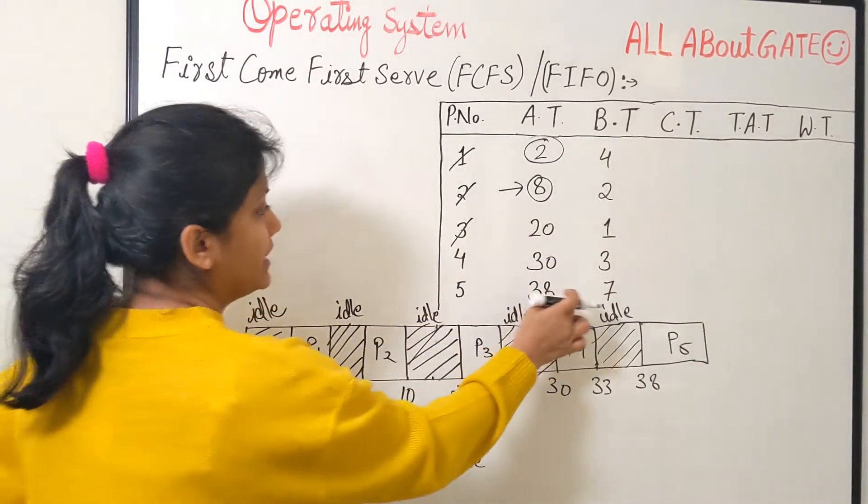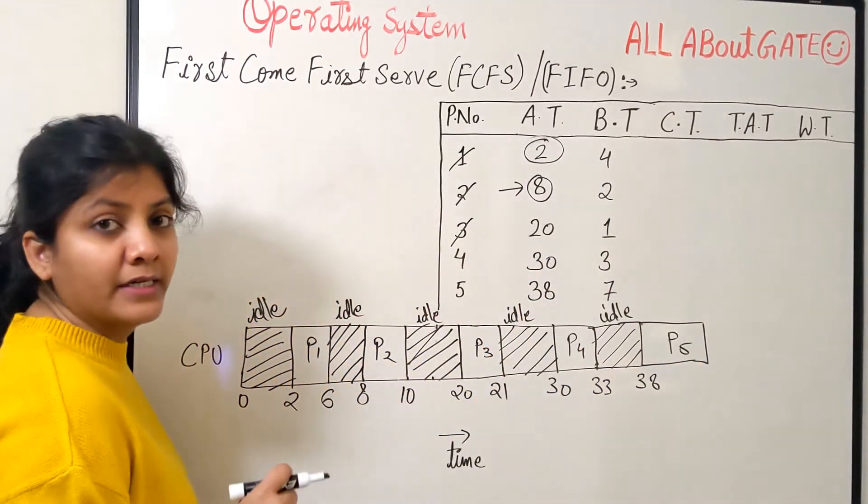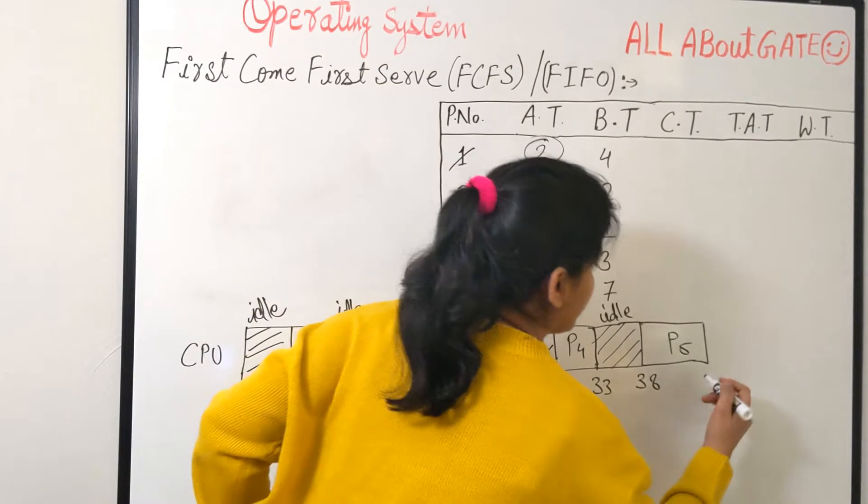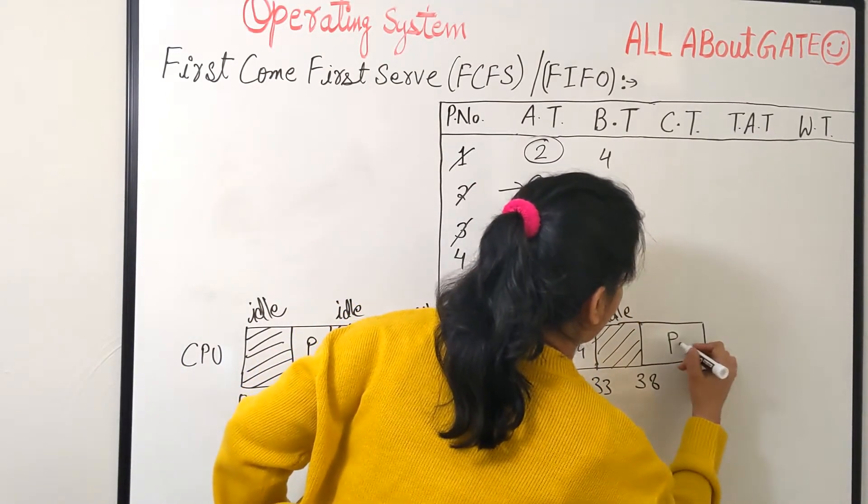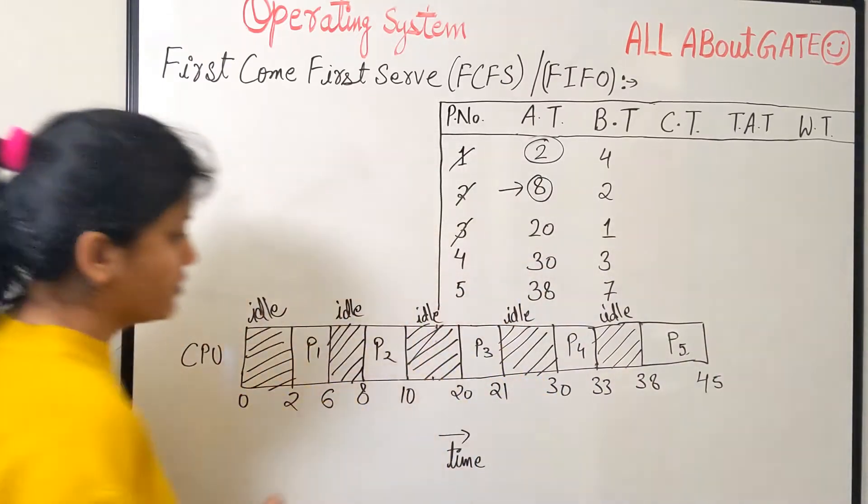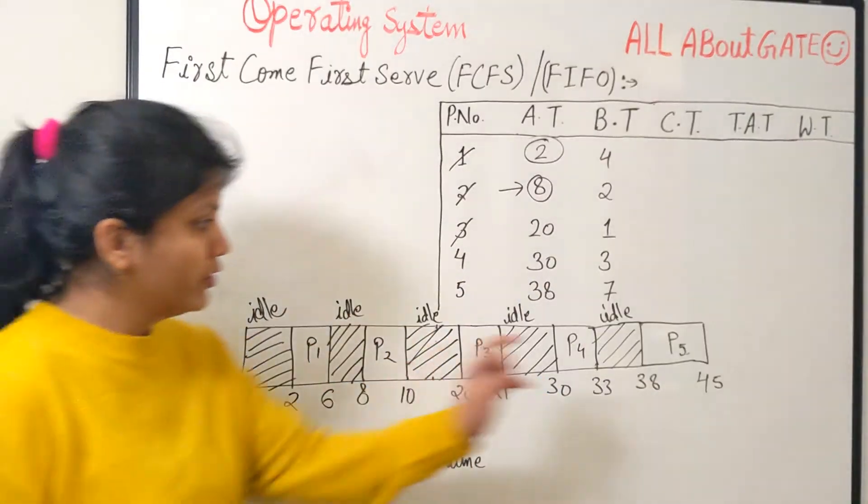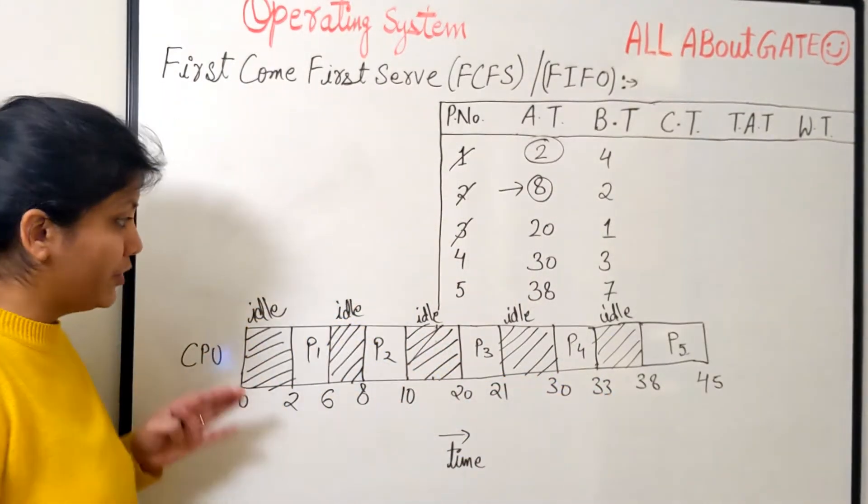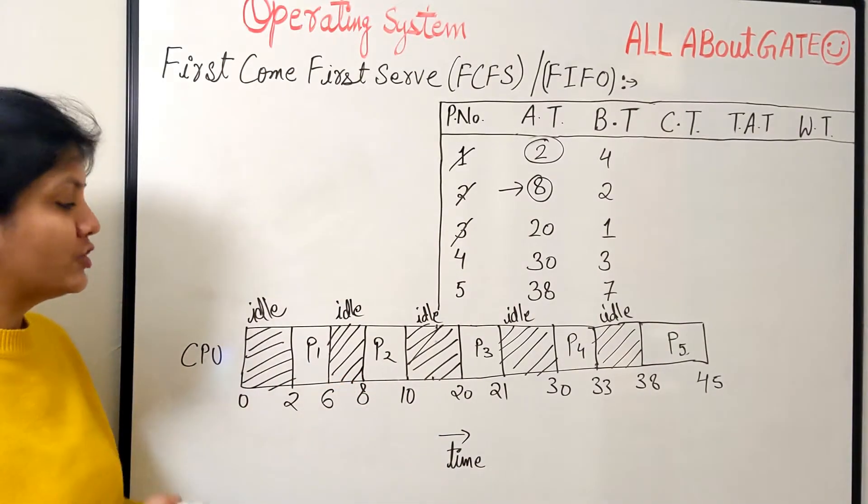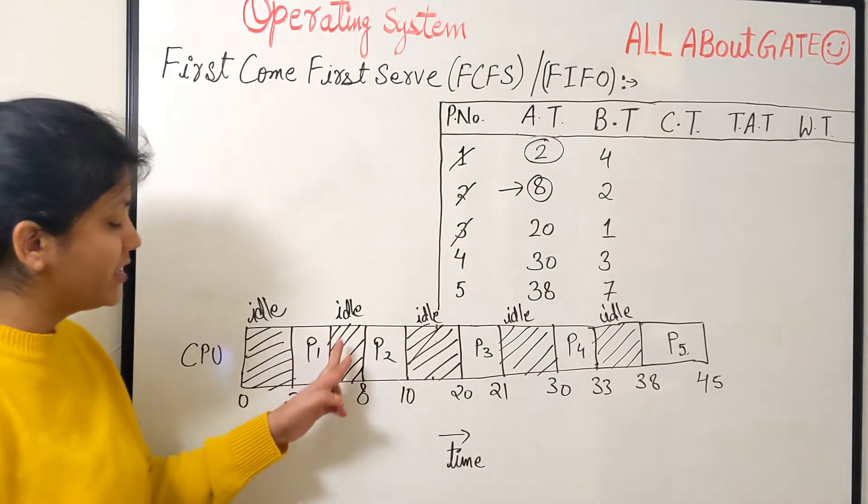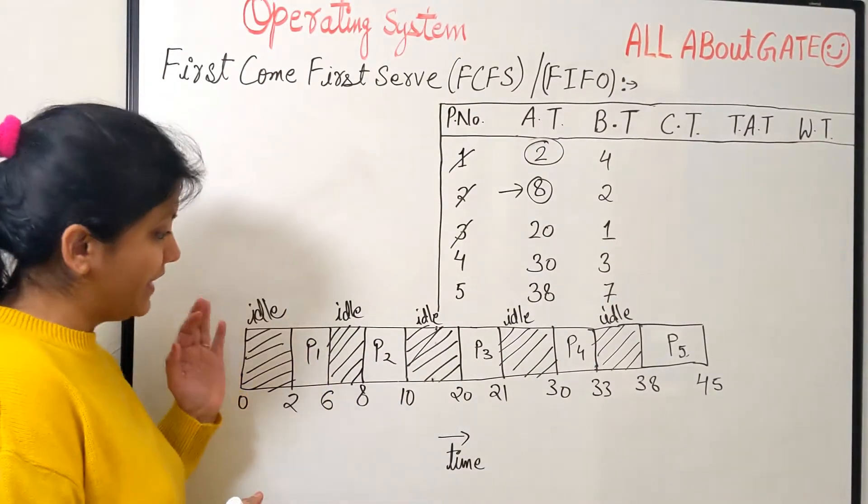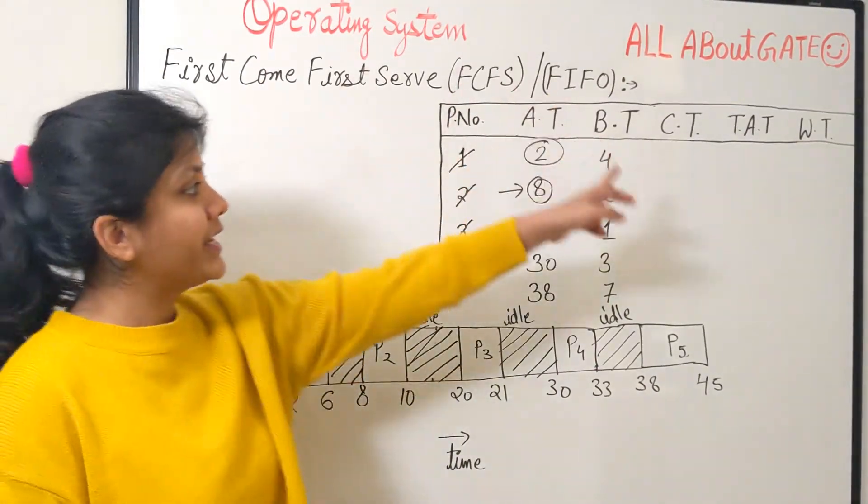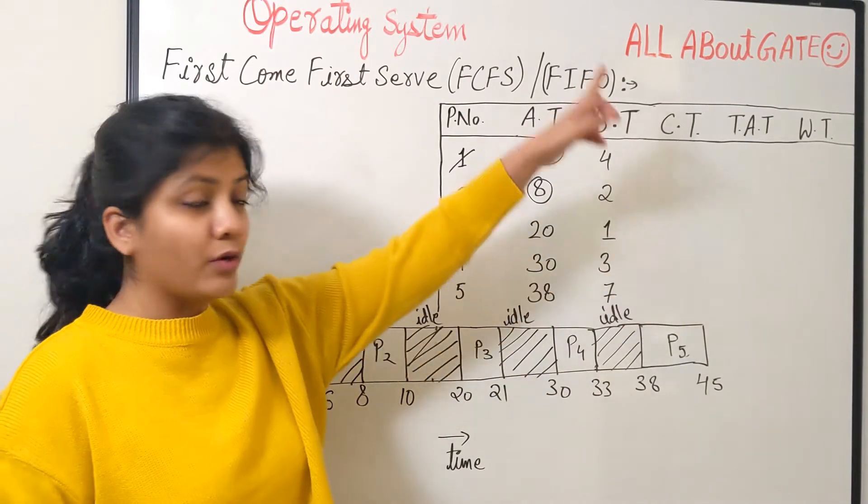And the last process to be executed, that is P5. How much time does it need? 7 burst. 7 burst. So from 38 plus 7 it becomes 45. So from time 0 to time 45 this is your scheduling and this shows the Gantt chart where we have so many intermediate blocks where the CPU is actually idle. So after finding out the Gantt chart now you can easily get the values of completion time, turnaround, and waiting.